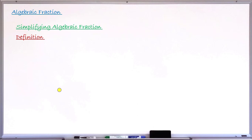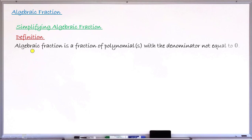My dear students, to begin the lesson, let me first define what an algebraic fraction is. An algebraic fraction is a fraction of polynomials with a denominator not equal to zero. That is, if you have a fraction in which either the numerator or the denominator or both contains a polynomial expression in terms of letters, but the denominator is not equal to zero, that type of fraction is called an algebraic fraction.